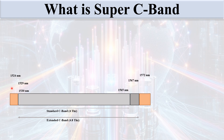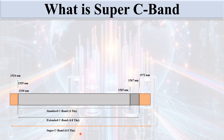If we extend some more bandwidth on both sides of the extended C band — taking 1524 nanometers on one side and 1572 nanometers on the other side — it becomes the Super C Band, which has a total of 6 terahertz of spectrum.